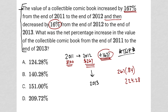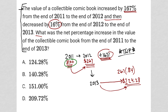So in 2013 the cost of the comic book is $224.28. To summarize: we went from $100 to $267 to $224.28. The question asks for the net percentage increase in the value of the comic book from the end of 2011 — the $100 amount — to the end of 2013, the $224.28 amount.